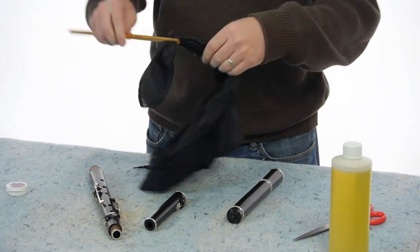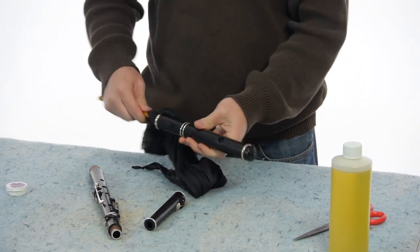For the head joint, I make a bundle out of the swab on the end of the cleaning rod and twist it around a few times.